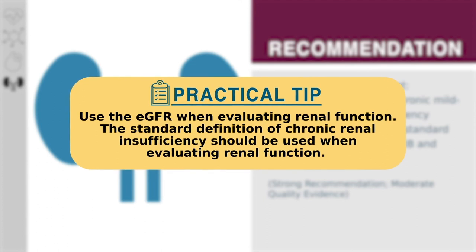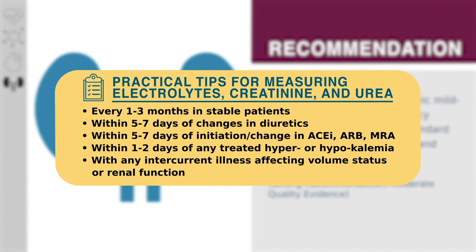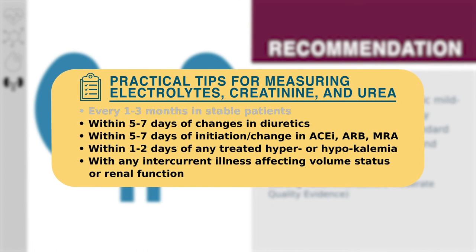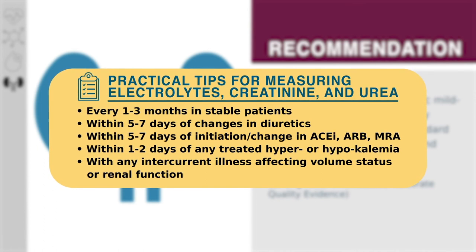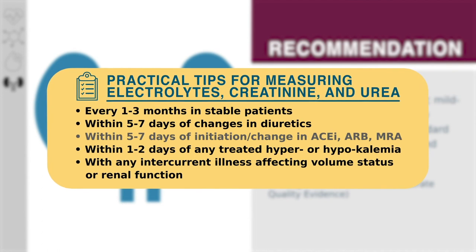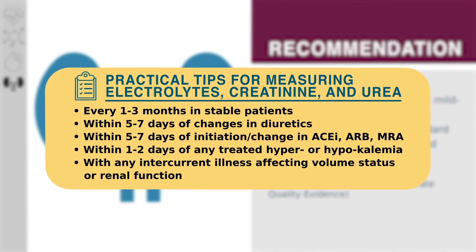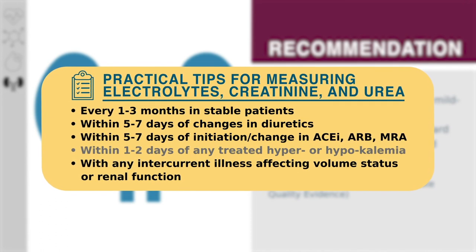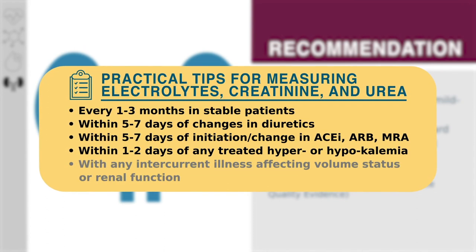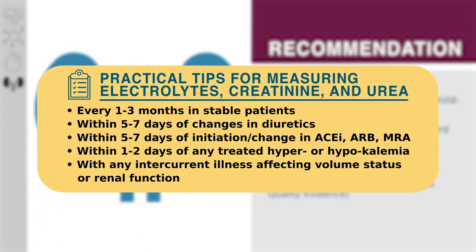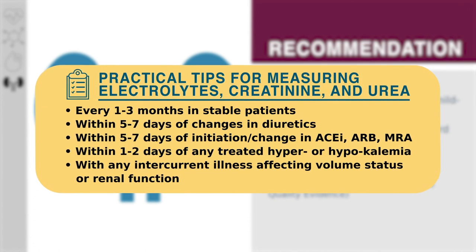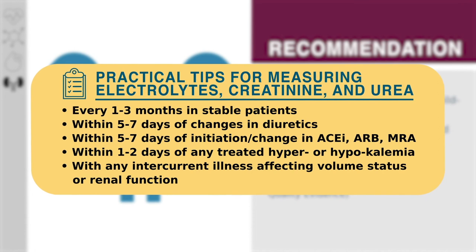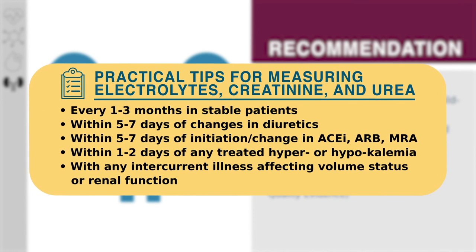The eGFR should be used when evaluating renal function. Renal function can be measured every one to three months in stable patients, within five to seven days of changes in diuretic therapy, within five to seven days of initiation or change in ACE inhibitor, ARB, or MRA dosage, or sooner if potassium is a concern. Monitoring should also occur within one to two days of any treated hyper- or hypokalemic episode, or with any intercurrent illness that might impact volume status or renal function. Markers such as BNP and NT-proBNP may need to be interpreted with caution in the presence of acute renal failure or end-stage renal disease.